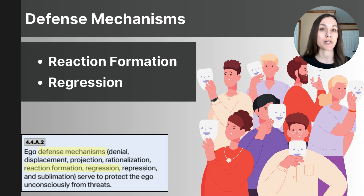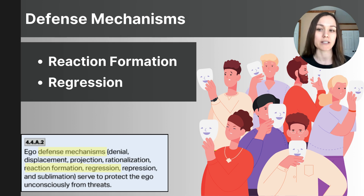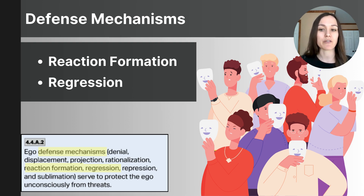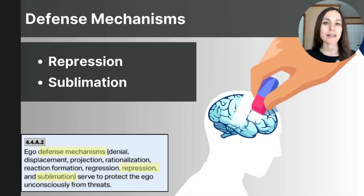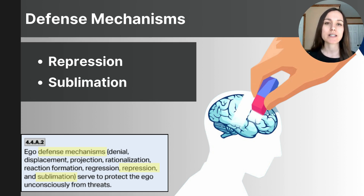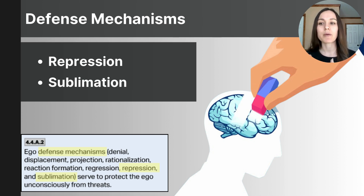Regression occurs when a person deals with a difficult or stressful situation by reverting back to a childlike state — for example, an adult throwing a temper tantrum when they don't get their way, or a middle schooler with social anxiety starting to suck their thumb. Repression is pushing distressing thoughts or memories out of conscious awareness. For example, a person who has experienced trauma may no longer have a memory of that event but still reacts with fear in similar situations — the painful memory has been repressed.